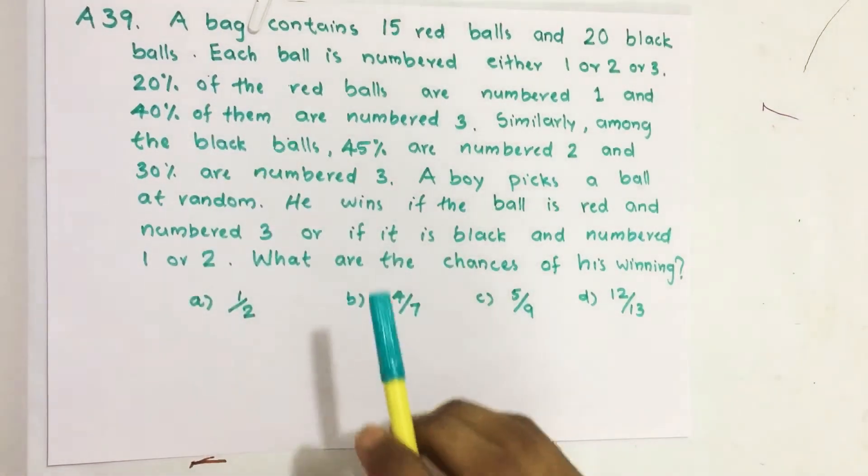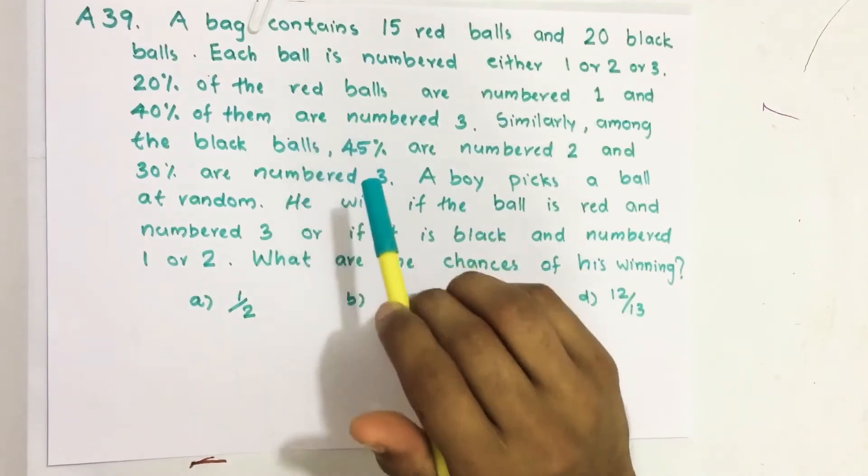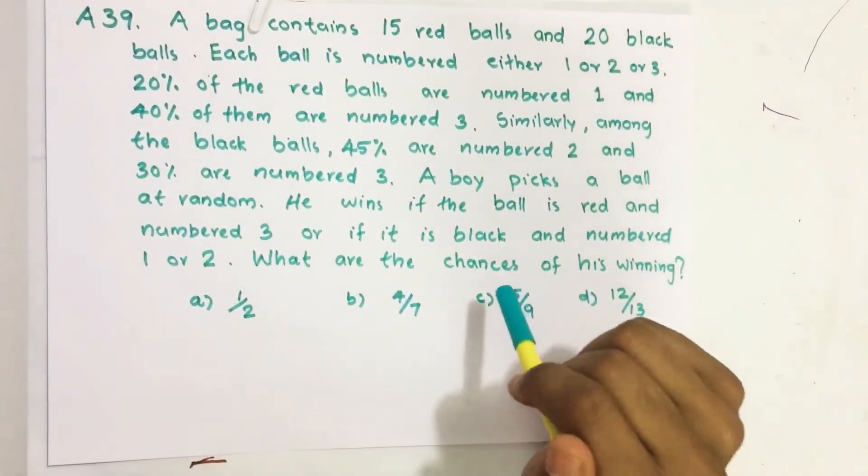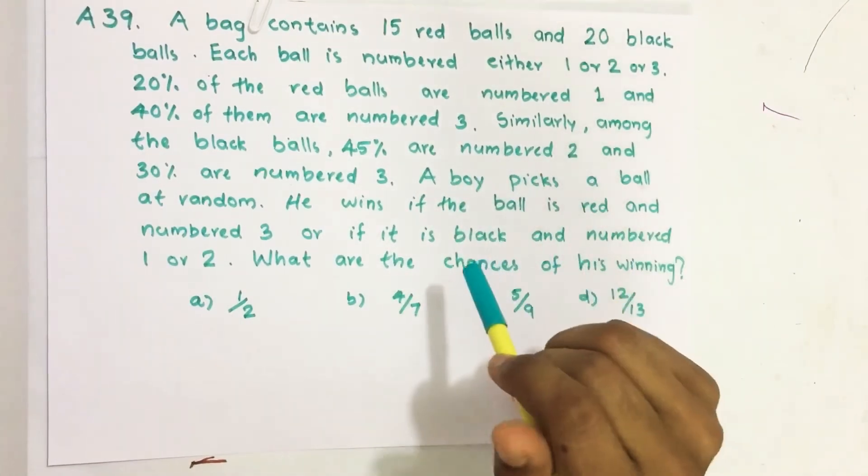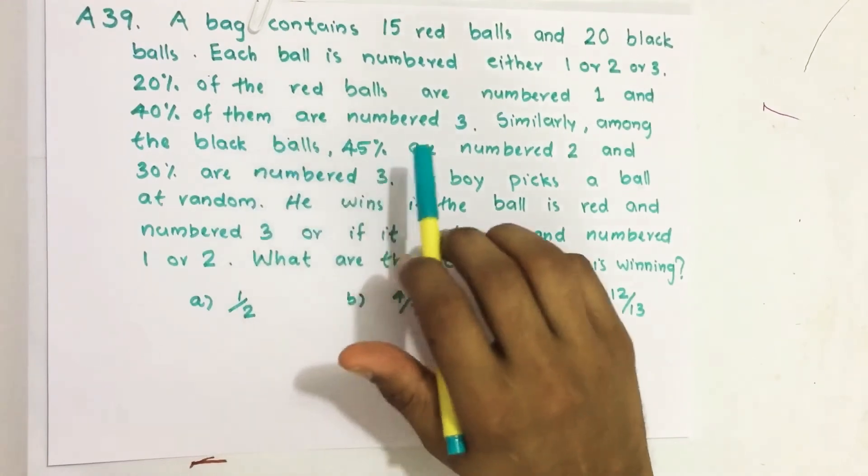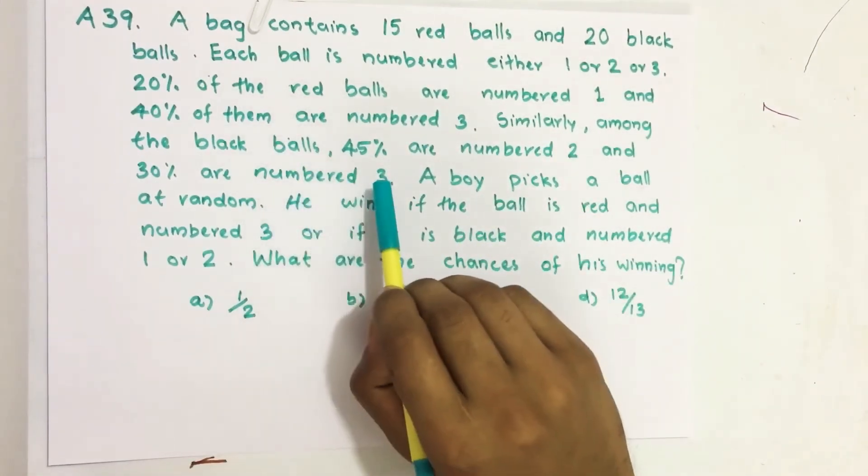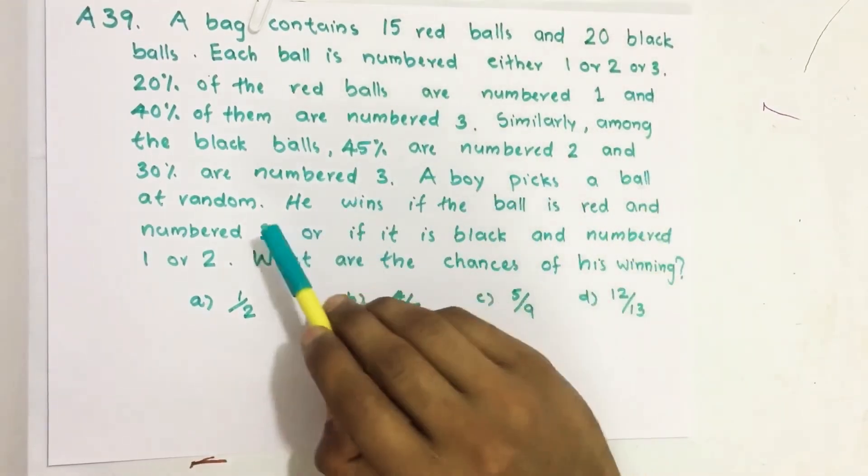A bag contains 15 red balls and 20 black balls. Each ball is numbered either 1, 2, or 3. 20% of the red balls are numbered 1 and 40% of them are numbered 3. Similarly, among the black balls, 45% are numbered 2 and 30% are numbered 3.